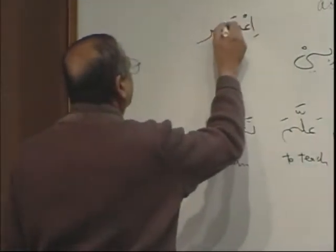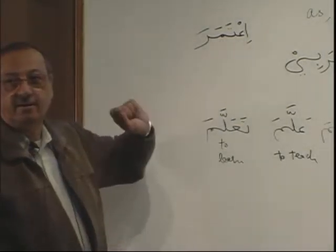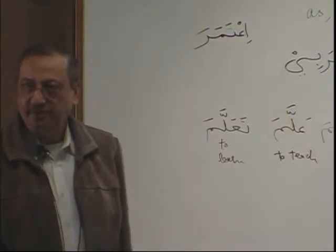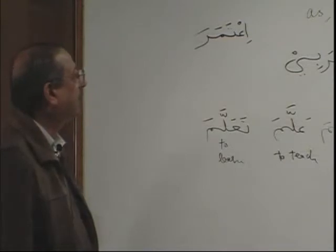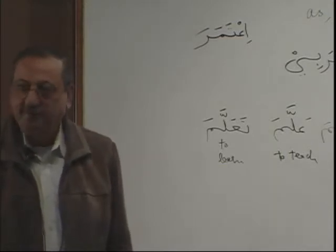Lan is used to negate something for the future. Here is one verb to note: i'tamara. The root is 'ayn, meem, and ra. The extra letters are hamza and ta — this is form 8. I'tamara means 'he performed umrah.' What will be the mudari'? Yatamiru — he performs umrah.